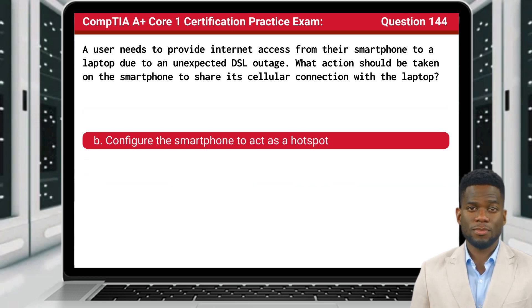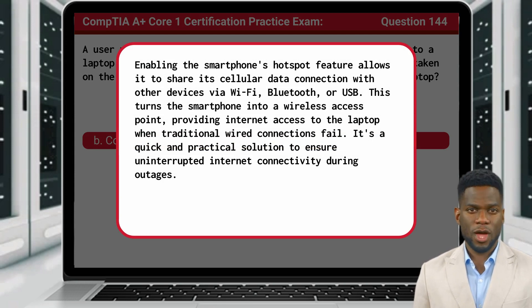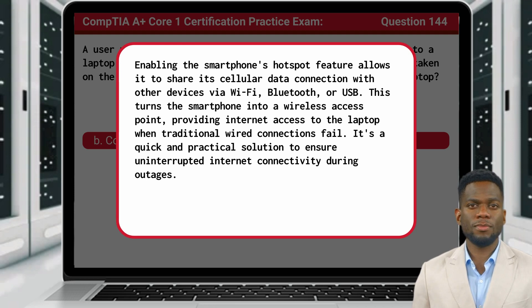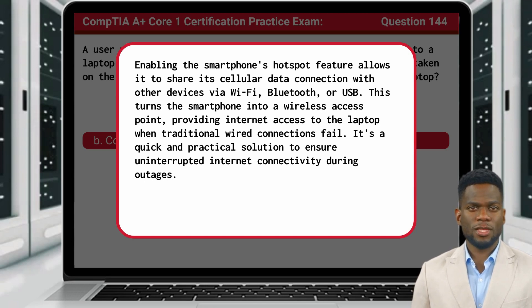The answer is B, configure the smartphone to act as a hotspot. Enabling the smartphone's hotspot feature allows it to share its cellular data connection with other devices via Wi-Fi, Bluetooth, or USB. This turns the smartphone into a wireless access point, providing Internet access to the laptop when traditional wired connections fail. It's a quick and practical solution to ensure uninterrupted Internet connectivity during outages.